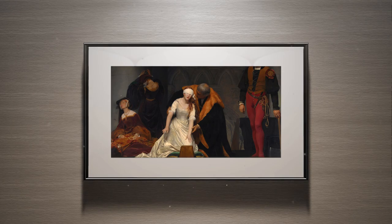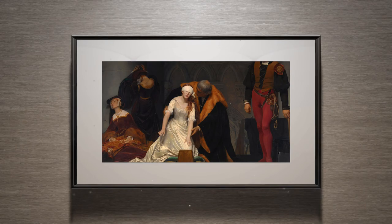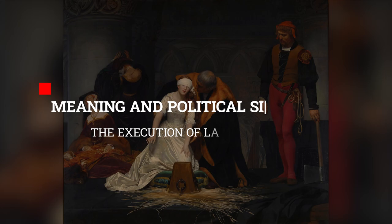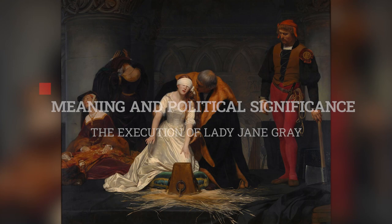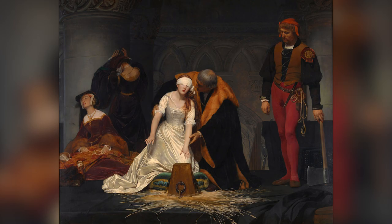After Lady Jane got executed, a lot of people considered it a religious execution, as she was Protestant while Queen Mary Tudor was Catholic. The English Reformation, which had begun under Henry VIII, was a major factor in these conflicts. Lady Jane's execution also strengthened Queen Mary's hold and served as a lesson for anyone else who was even slightly interested in rebellion.